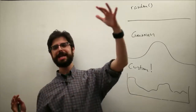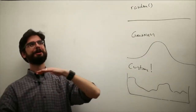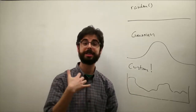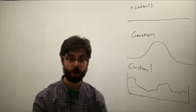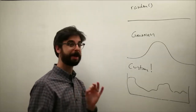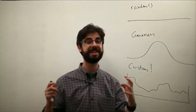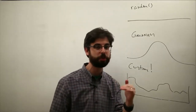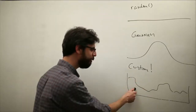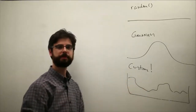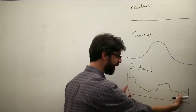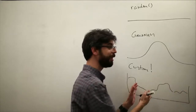For example, way down the road — really at the end of this video series — there will be a video about genetic algorithms: how do we simulate the process of evolution in code? One of the things we'll need to do in an evolutionary system is pick parents based on their fitness. We want to map that fitness to a probability of being picked to pass genetic material down to the next generation. That's going to involve a highly custom set of random numbers.